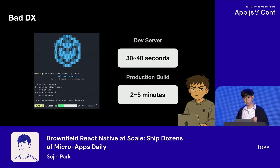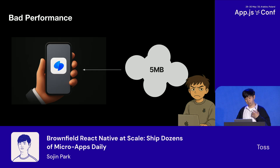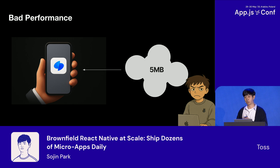When developing with a monolithic bundle, many of you have probably seen this every day — Metro trying to start a dev server. For our monolithic build, even with only tens of services, the dev server startup took around 30 or 40 seconds, and production builds took like two to five minutes. When you're deploying 40 or more times daily, this was a big burden. On top of that, our single bundle was around five megabytes, and loading that on a low-end Android device took significant time, leading to frustrated users at loading screens.